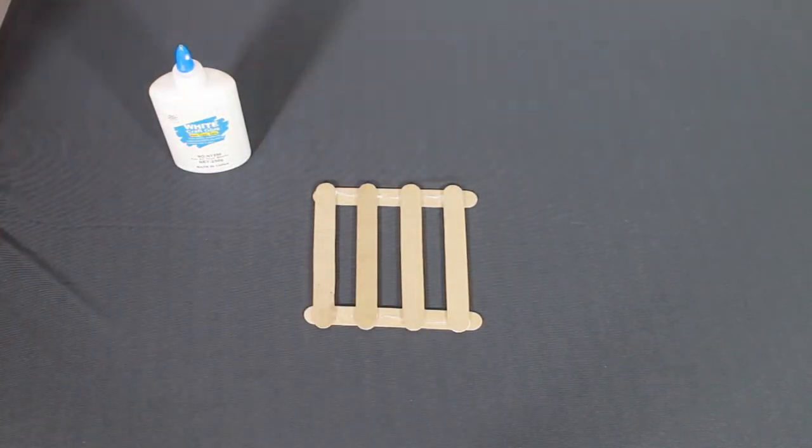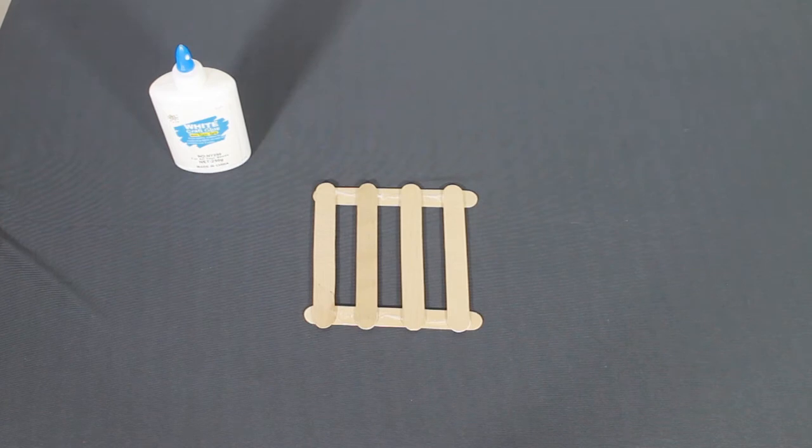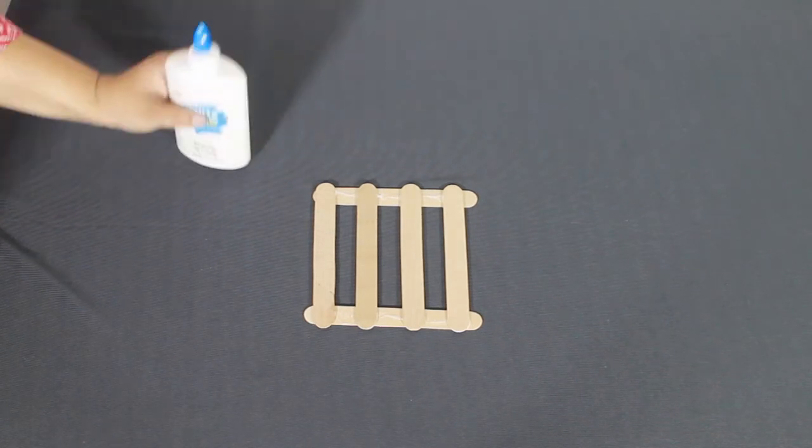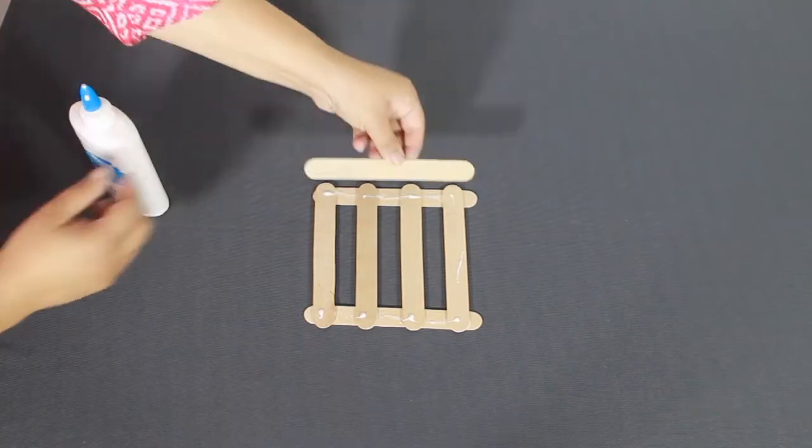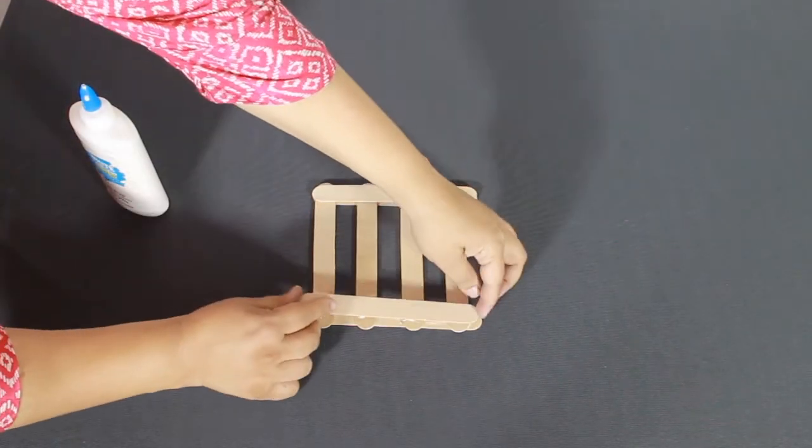Lay a bed of craft sticks side by side. Remove alternate sticks ensuring even space between the craft sticks. Spread some more glue and place another supporting craft stick on it, making a sandwiched layer. Let the glue dry.